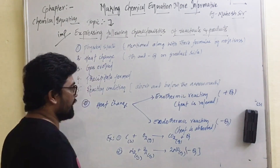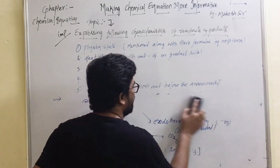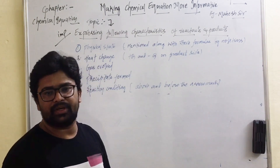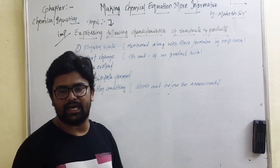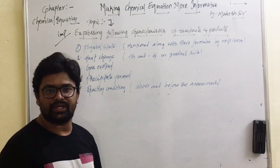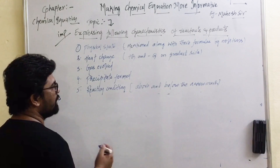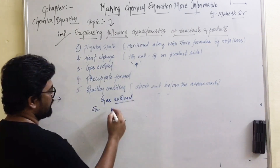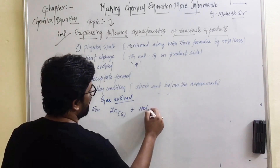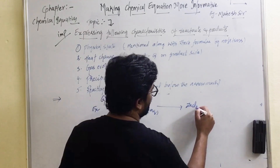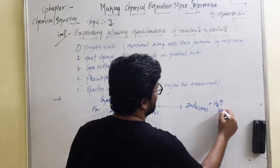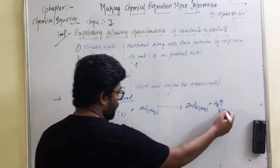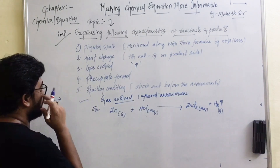The next characteristic is gas evolved. How do we express a gas evolved during a chemical reaction? We came across this in lecture one, activity three, when zinc reacts with hydrochloric acid and releases hydrogen gas. If there is a release of gas in a chemical reaction, it is expressed by an upward arrow mark. For example: Zn + HCl gives rise to ZnCl₂ + H₂↑. If a gas is evolved during a chemical reaction, we represent it with an upward arrow mark.